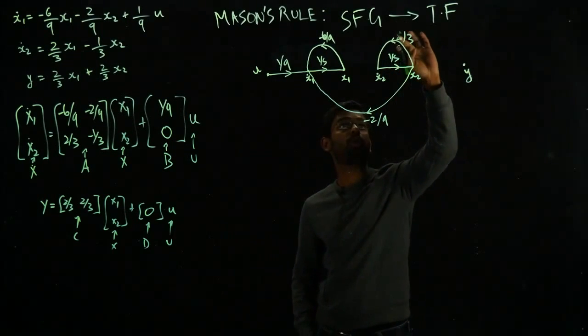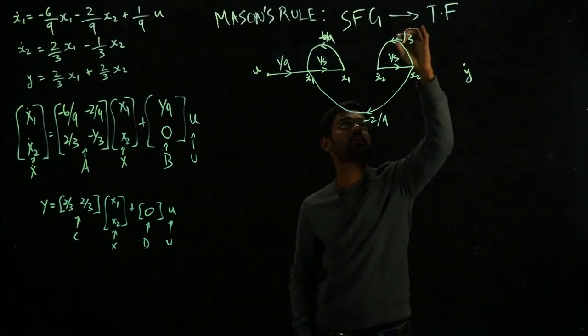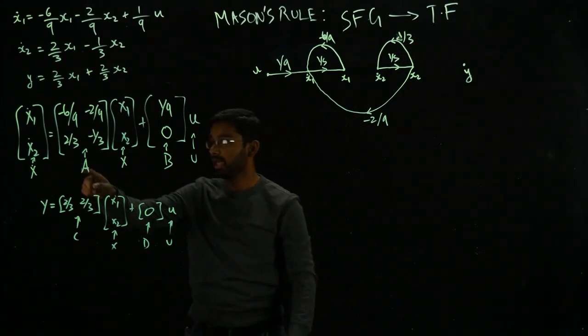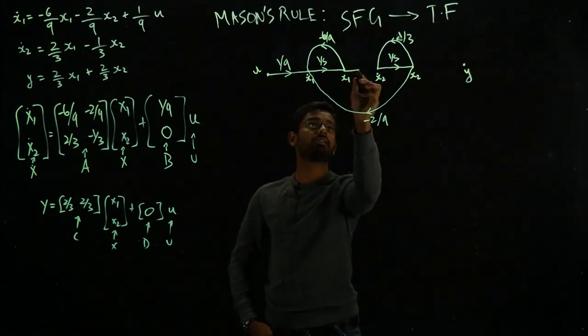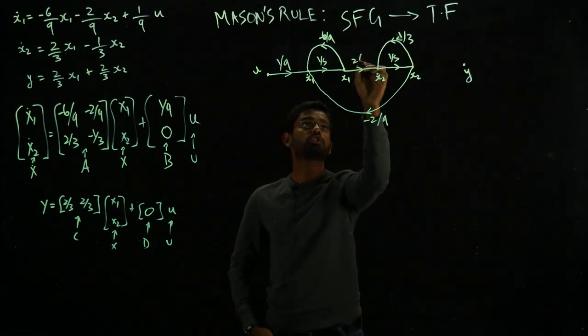From x₁ it is 2 over 3. So this line right here is going to be 2 over 3. This is minus 1 over 3.